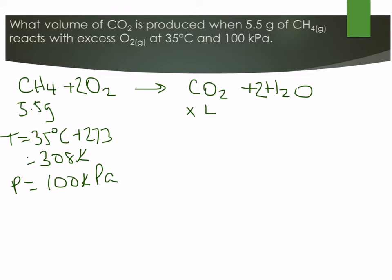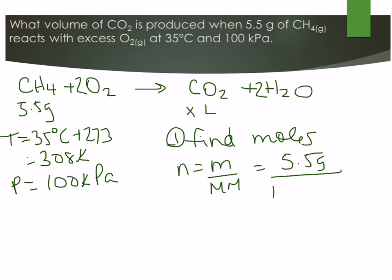When we're dealing with stoichiometry your first step is to always find moles. In this case we are given a mass. So we're going to find moles using moles equals mass over molar mass. Our mass is 5.5 grams and our molar mass is 16.05 grams per mole. And so we get 0.343 moles of methane.